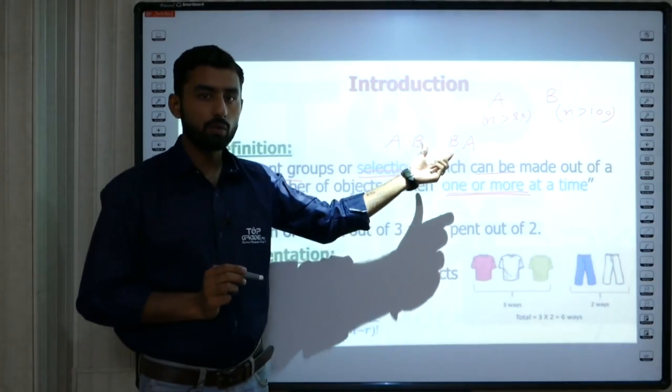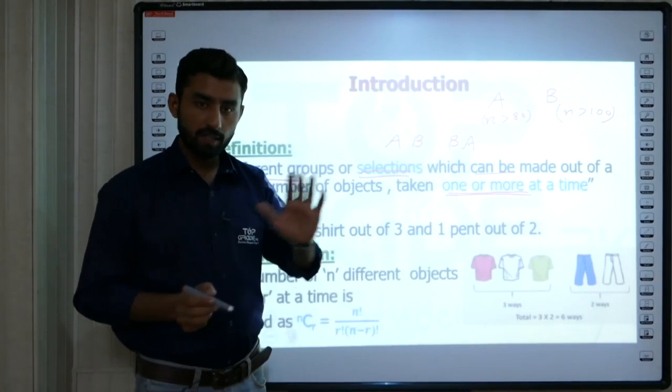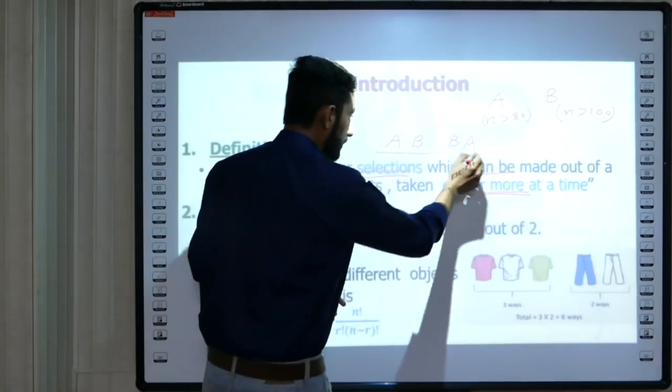So AB and BA are two different permutations. But if we talk about combination, AB and BA are the same combination.